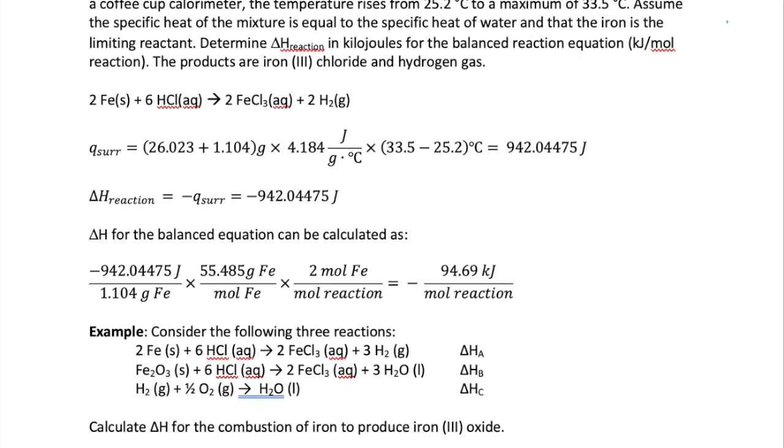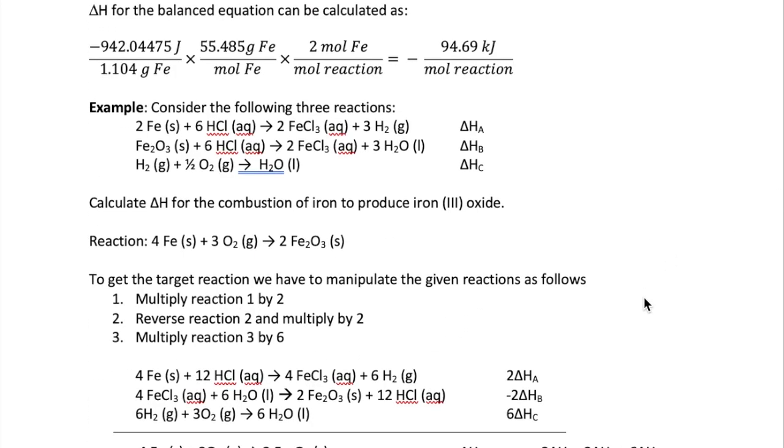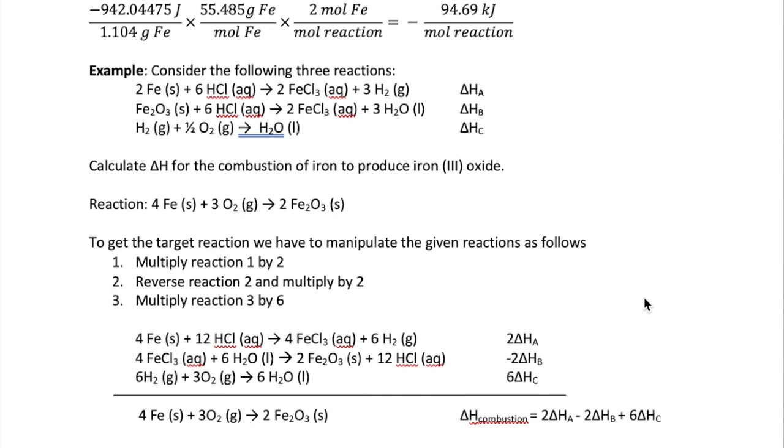So that's how you will calculate the experimental delta H from your coffee cup calorimeter data. Let's now do another example to show you what you will need to do to get your enthalpy of combustion once you have all three delta H values. So here you have your experimental values. They're labeled delta HA and delta HB for the metal and metal oxide reactions. In your actual reaction, of course, these will be numbers. Then you also obtain a value for the standard molar enthalpy of formation for water, which here we call delta HC. The question asks you to calculate the combustion enthalpy of iron to form iron oxide, which is given right here.